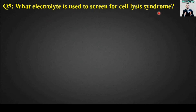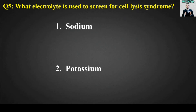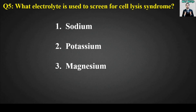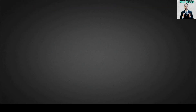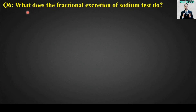MCQ number five: What electrolyte is used to screen for cell lysis syndrome? Options are: sodium, potassium, magnesium, or phosphate. The right answer is option number two — potassium is the electrolyte used to screen for cell lysis syndrome.